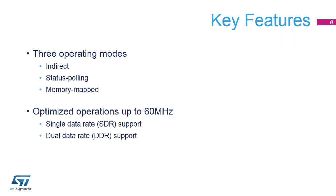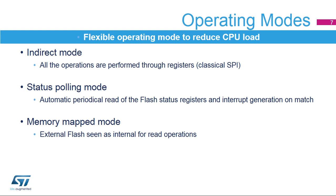The OctoSPI integrated inside STM32 products offers three operating modes, which will be explained later in this presentation. Communication with external memory supports single or dual data rate operation. The three different modes of operation are: indirect mode, where it behaves as a classical SPI interface and all operations are performed through registers; status polling mode, where the flash status registers are read periodically with interrupt generation; or memory mapped mode, where external memory is seen as if it is internal memory for read operations.